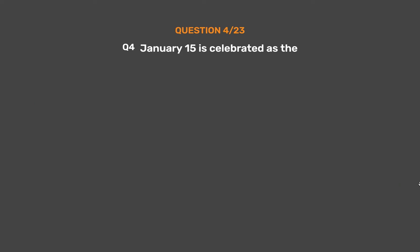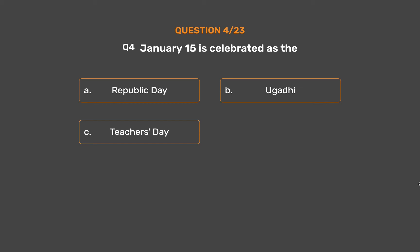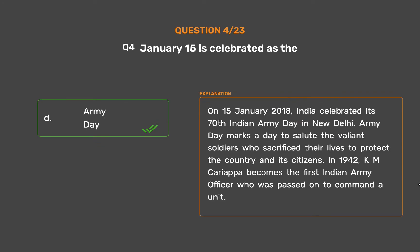Question No. 4. January 15th is celebrated as: Option A, Republic Day; Option B, Ugadi; Option C, Teachers Day; Option D, Army Day. The correct answer is Option D. On 15th January 2018, India celebrated its 70th Indian Army Day in New Delhi. Army Day marks a day to salute the valiant soldiers who sacrificed their lives to protect the country and its citizens.